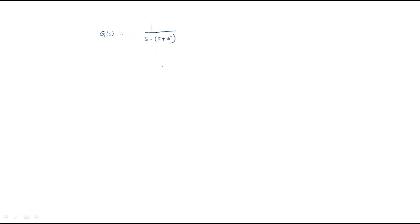If we draw the root locus for this transfer function, we have two poles: s = 0 is one pole and s = -5 is another pole. So we have two poles on the real axis.